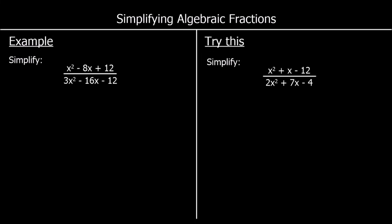Here we have another example. This time we have x squared minus 8x plus 12 on top, and 3x squared minus 16x minus 12 on the bottom. So we've got a harder quadratic on the bottom — it's going to be harder to factorise. But we're following the same steps: factorise the top, factorise the bottom, and cancel a common factor. For the top, we'll have two brackets with x in both. What multiplies to make 12 and adds to make negative 8? That's negative 2 and negative 6.